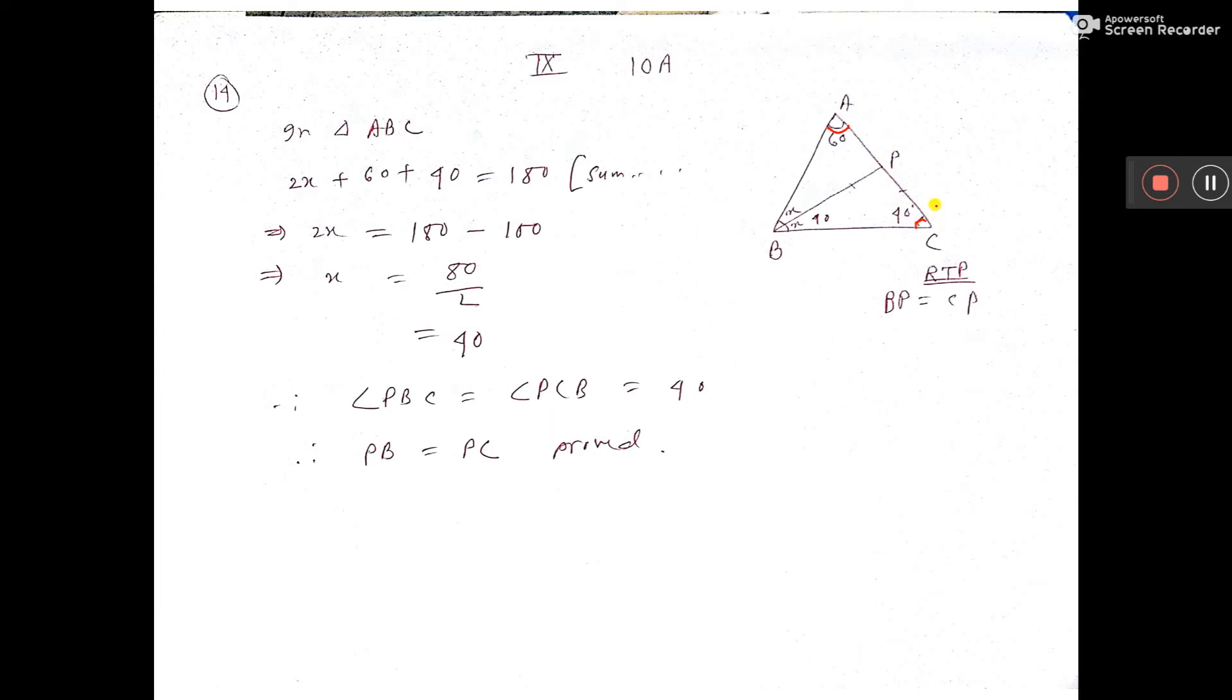Bisector of angle ABC meets AC at the point P. Show that BP is equal to CP. This one we have to show. Now, bisector means one angle if we consider X, another also X.